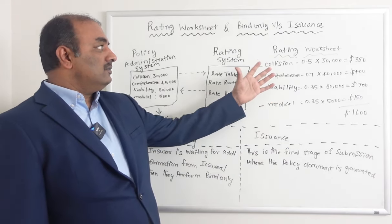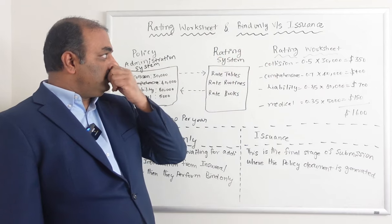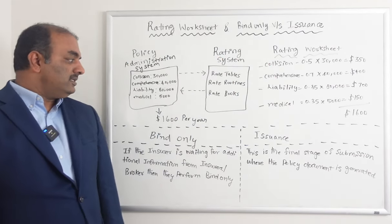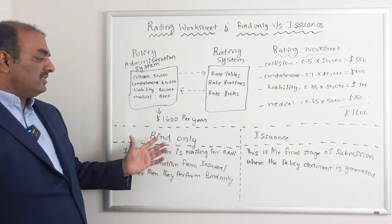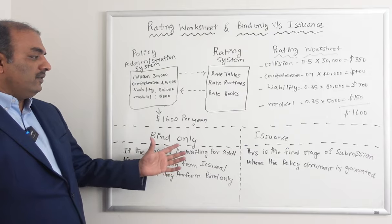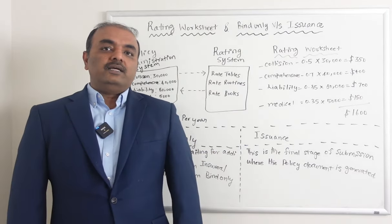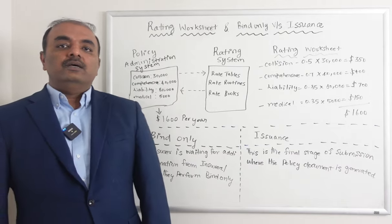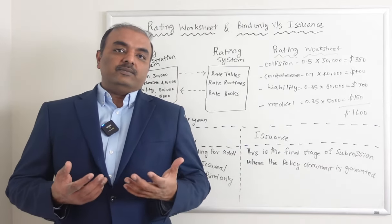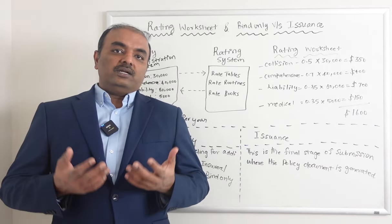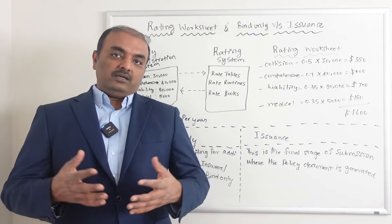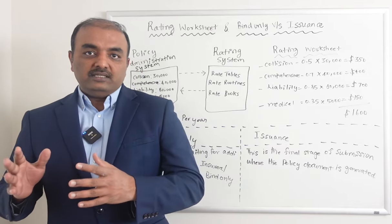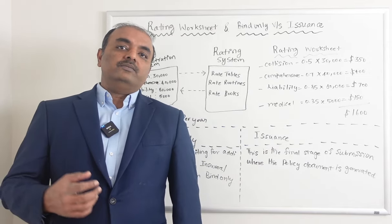So this is what I wanted to cover regarding the rating worksheet. Now the second topic is the difference between bind only and issuance. Let's take the same personal auto example — you created a submission, you want insurance for your car, everything is done, you create a quote, and you get the premium.